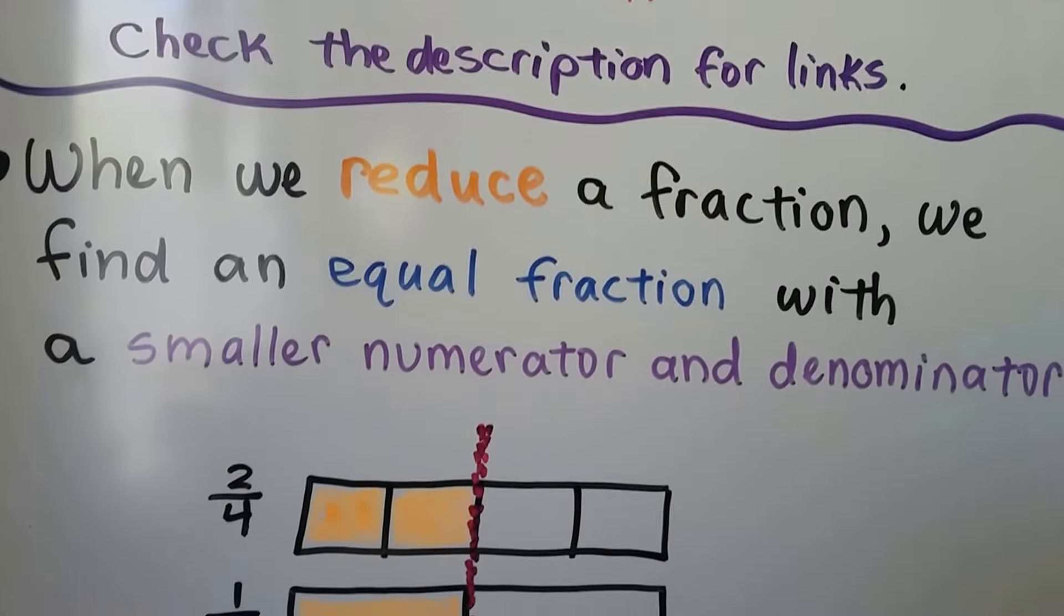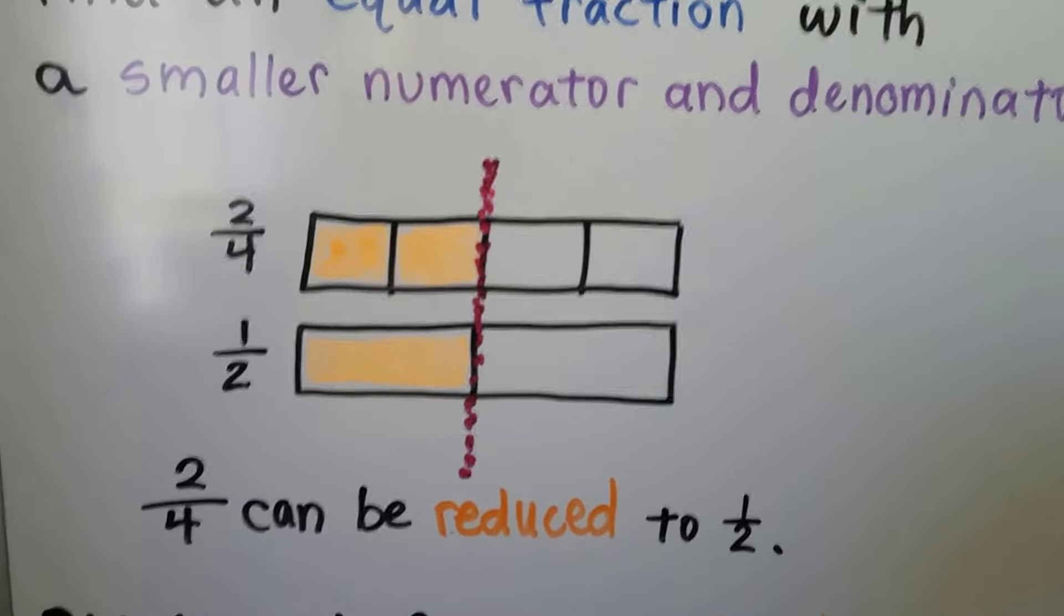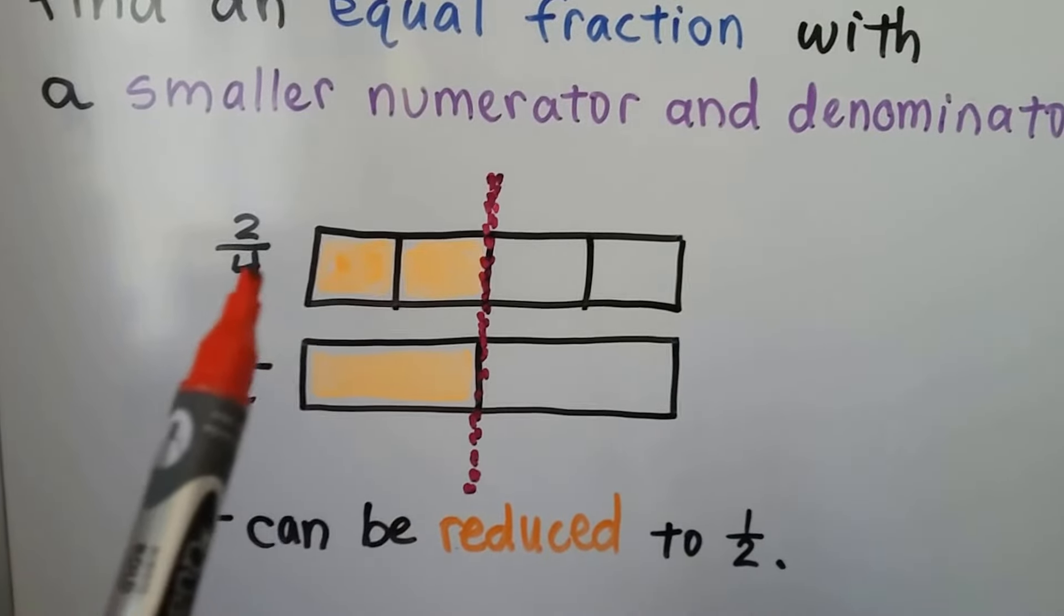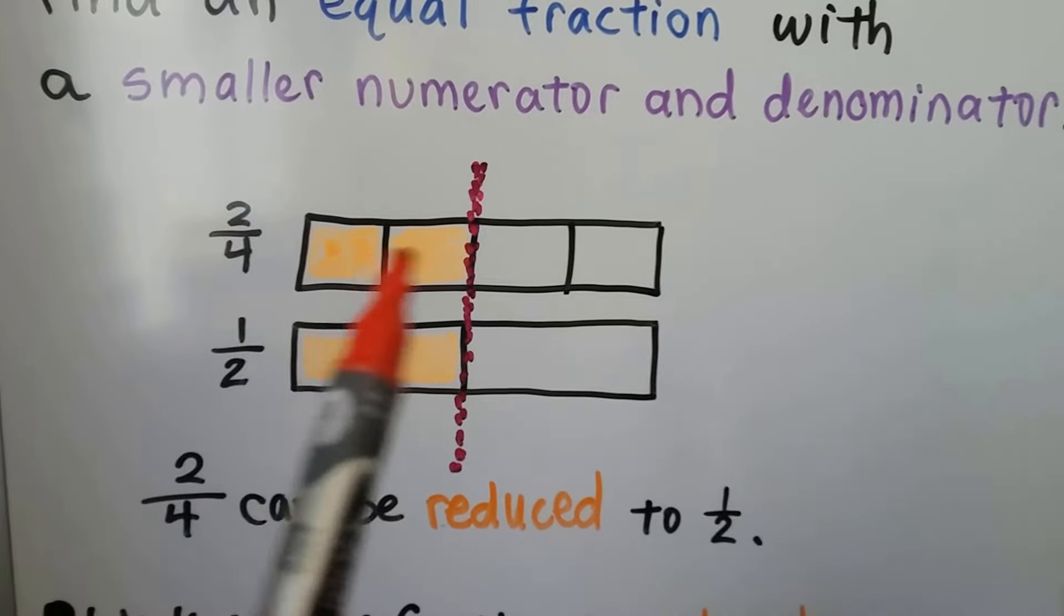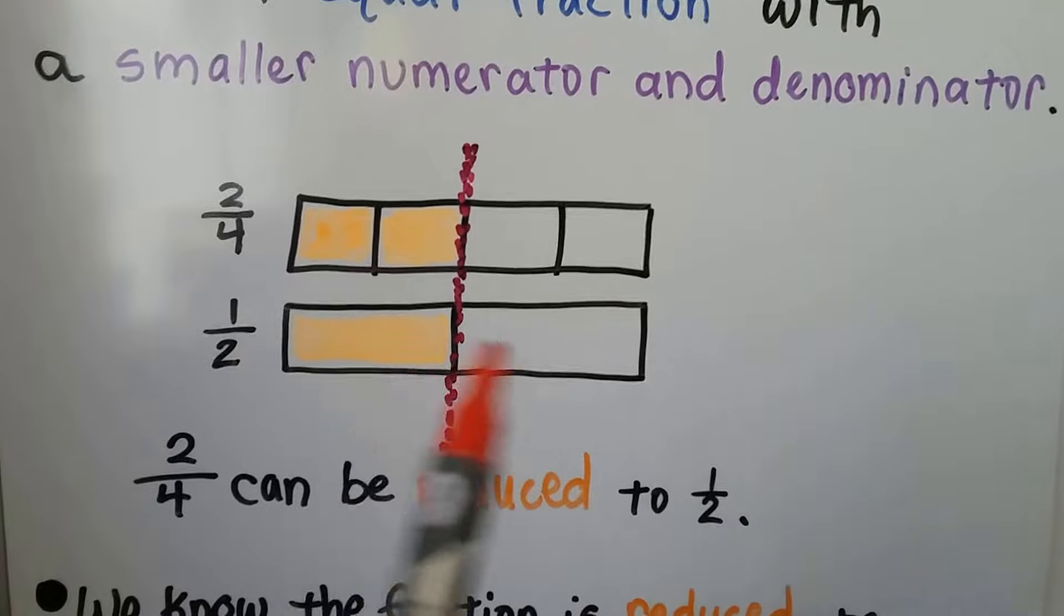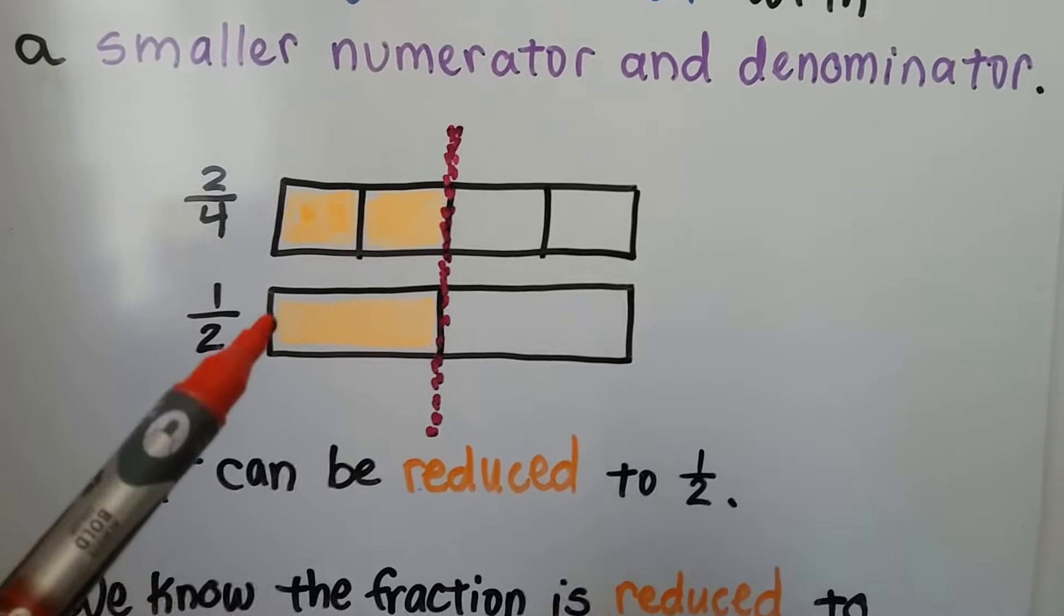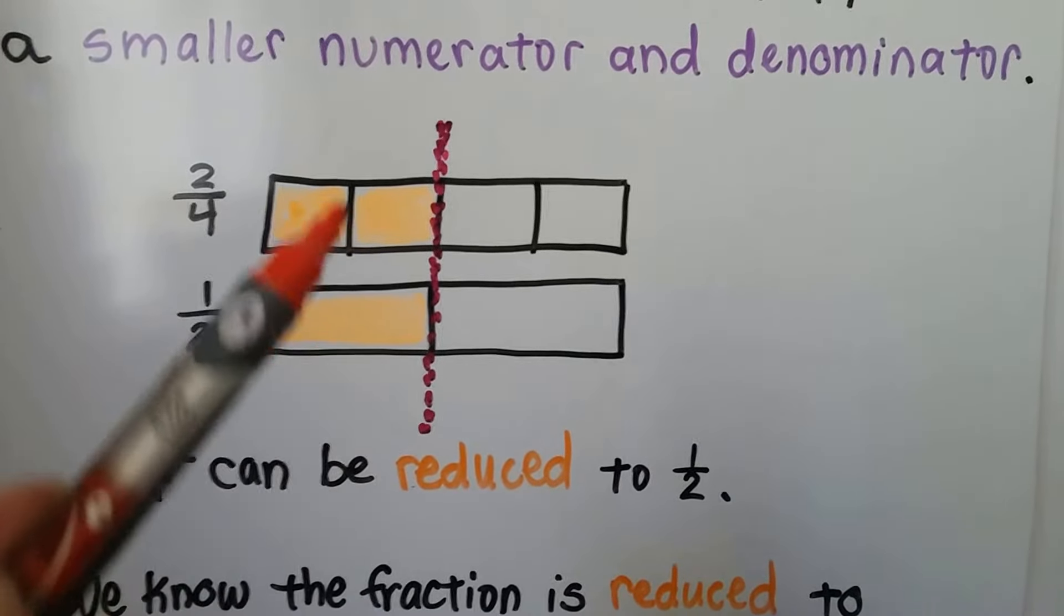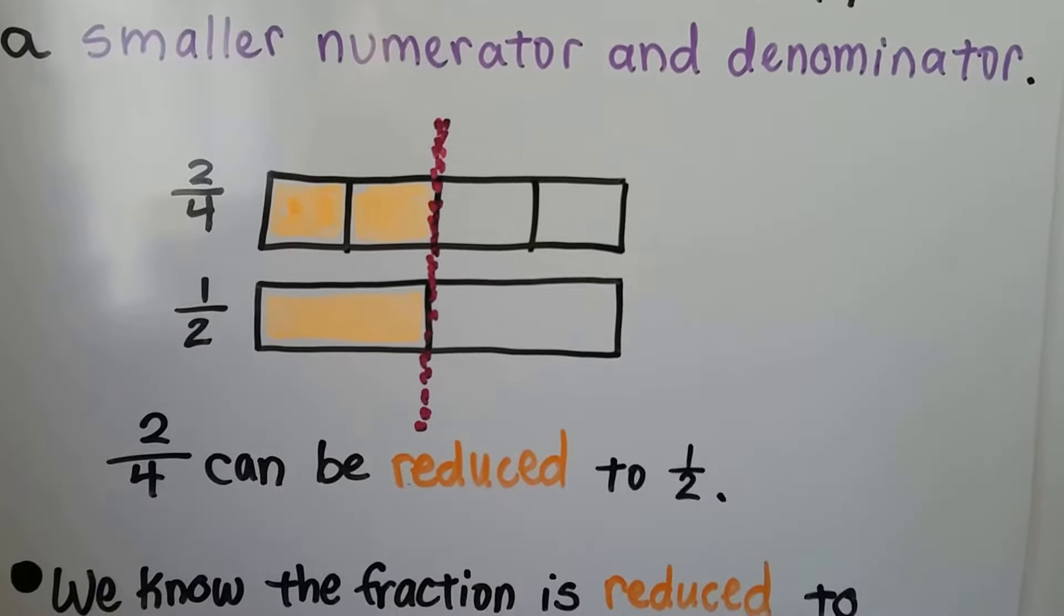When we reduce a fraction, we find an equal fraction with a smaller numerator and denominator. So this bar on the top represents 2 fourths because it's split into 4 parts, that's the denominator, that are equal. And the numerator is how many are shaded, so it's 2 fourths. This is split into 2 parts, that's the denominator, and 1 part is shaded. But they're equal because the bars are the same size. It's just this one's missing that little line there. So these are equivalent fractions, and this 2 fourths can be reduced to 1 half.